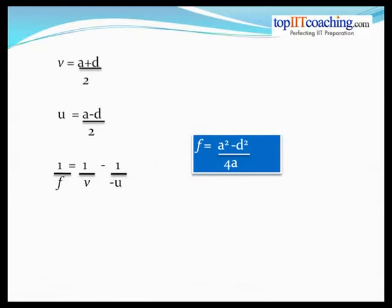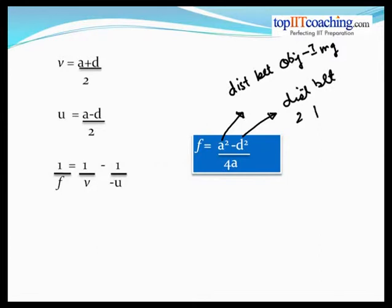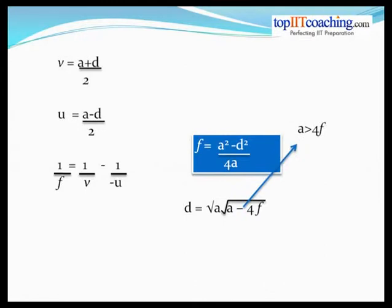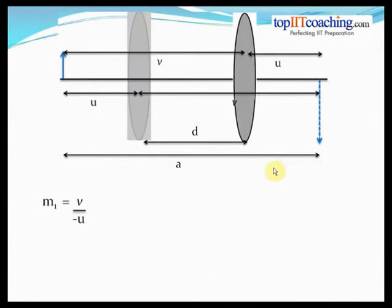From f = (a² − d²)/(4a), d = √(a(a − 4f)), so a must be greater than 4f. This is an important condition for the displacement experiment to be successful — the distance between the object and image must be greater than 4 times the focal length of the lens.